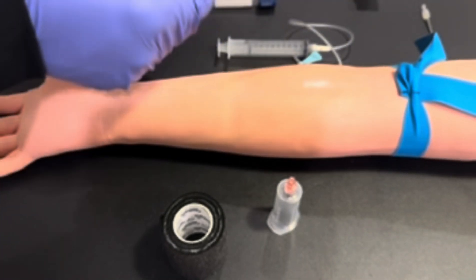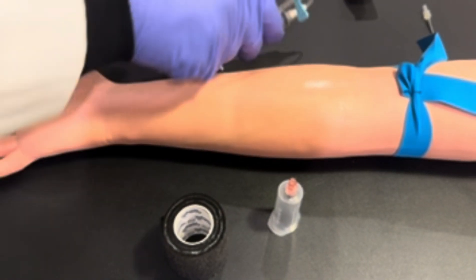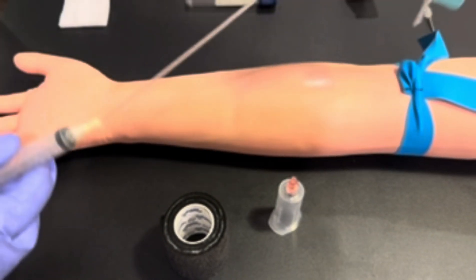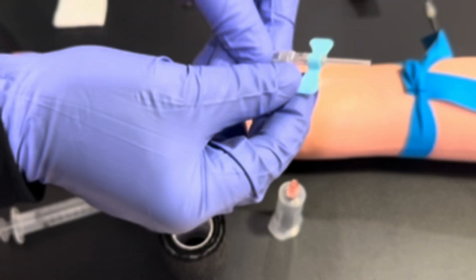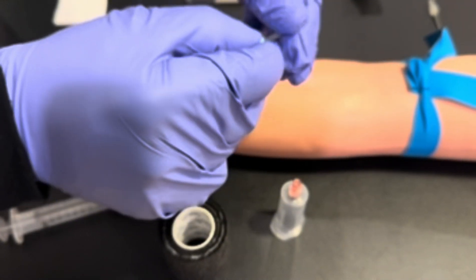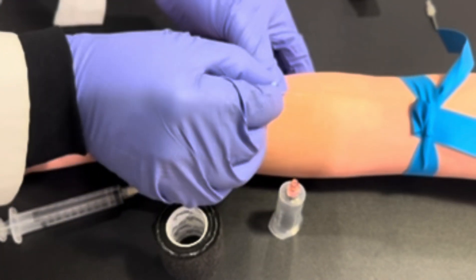Once you have prepped and cleaned the venipuncture site, allow the site to dry. Pick up your butterfly needle and anchor the vein.